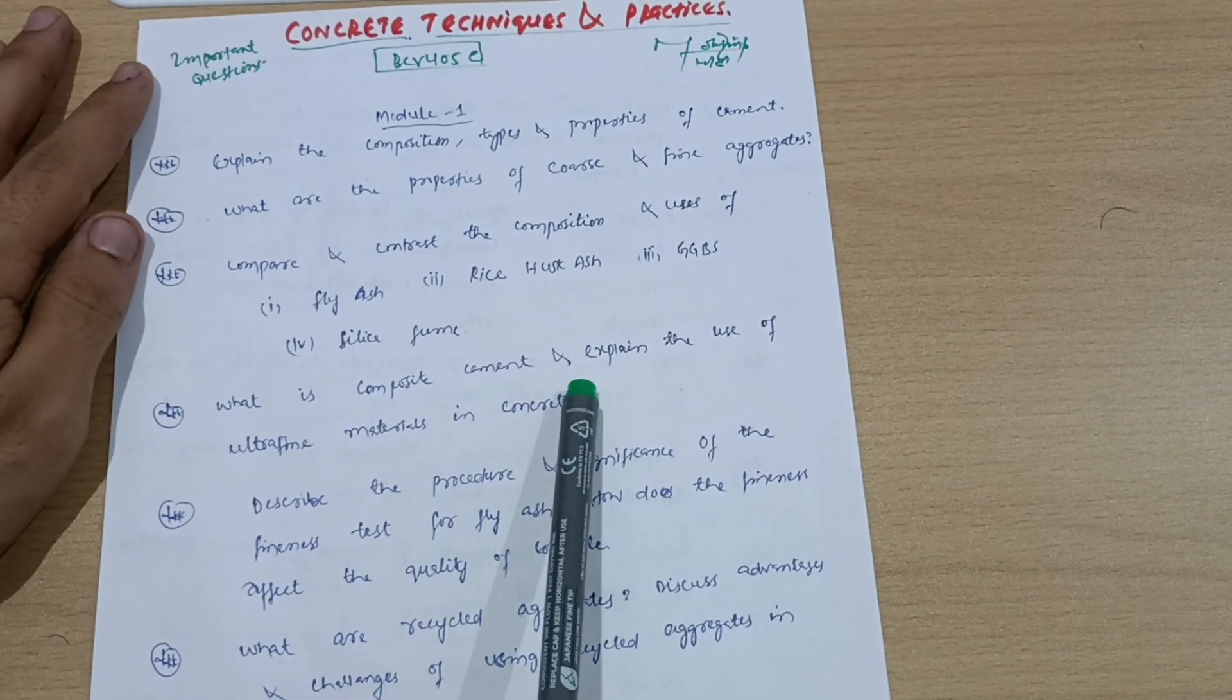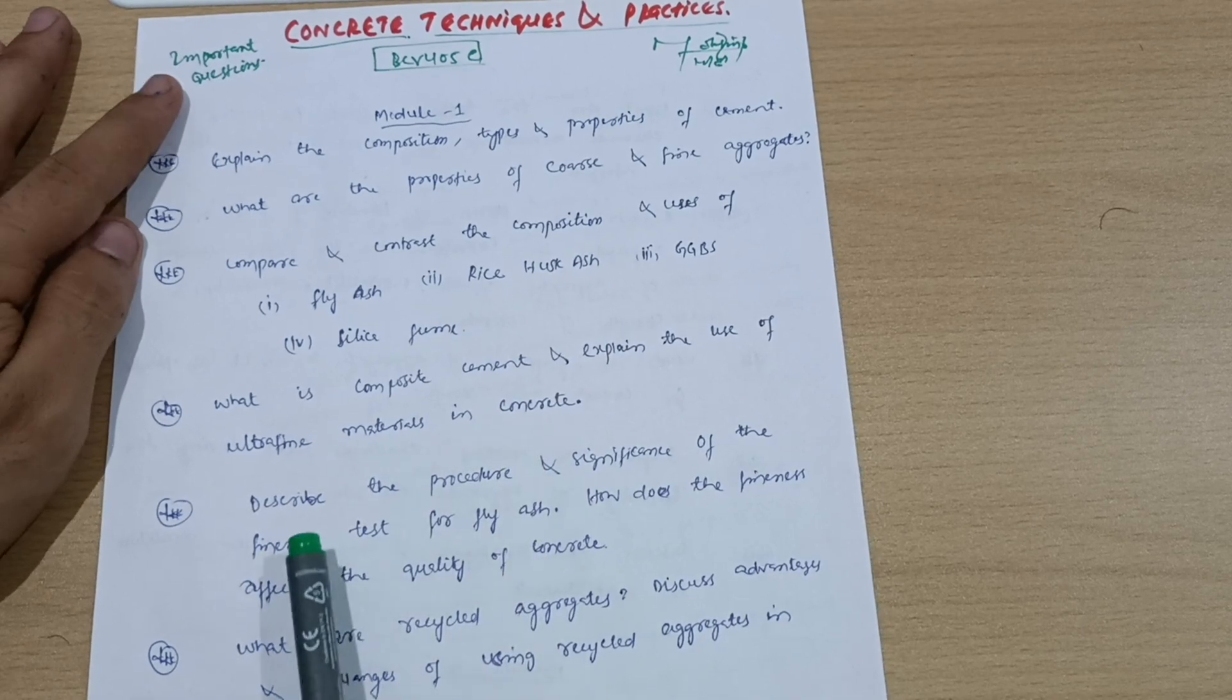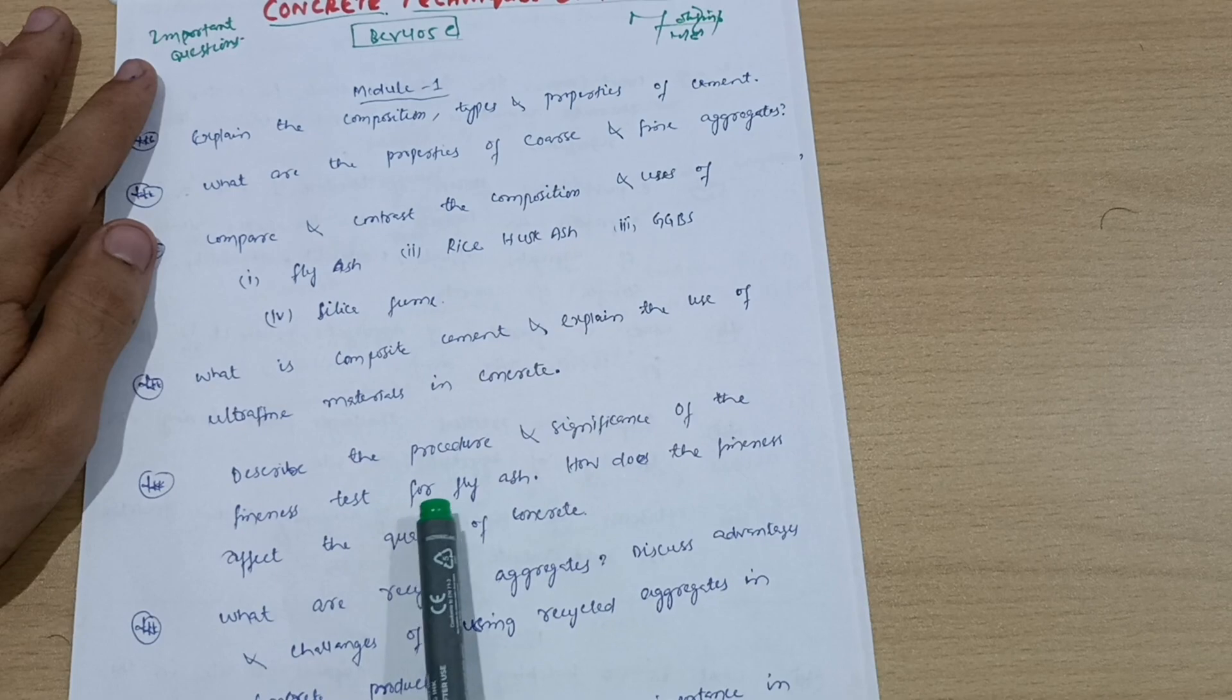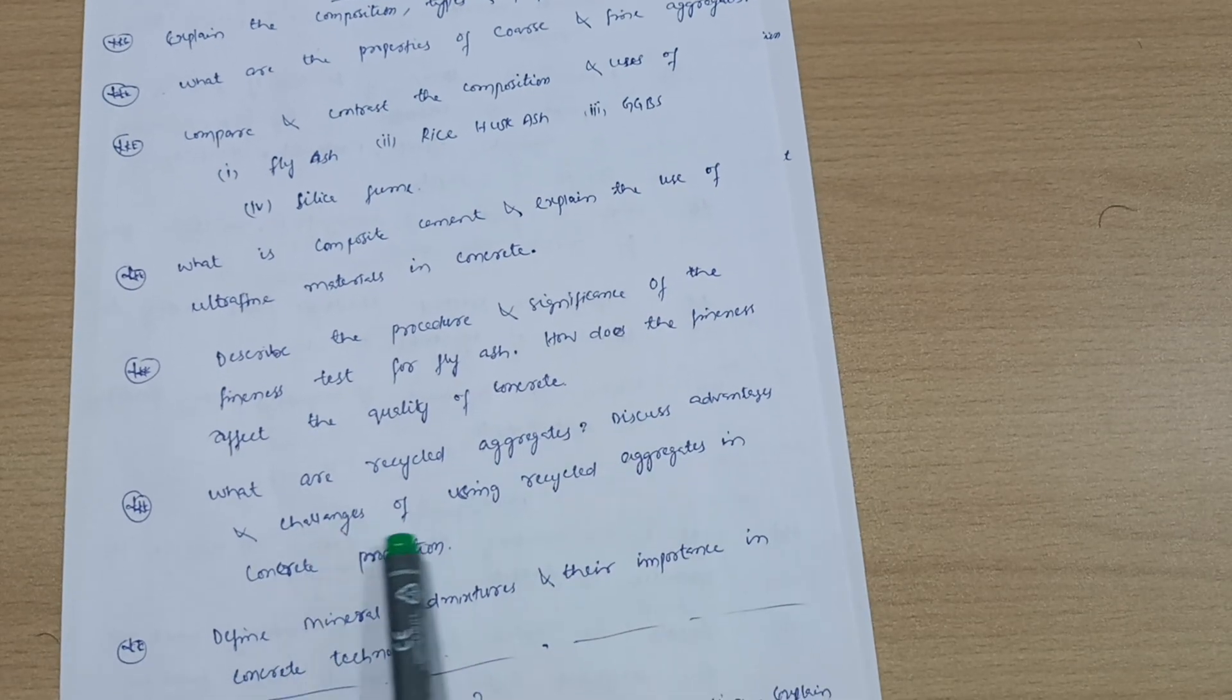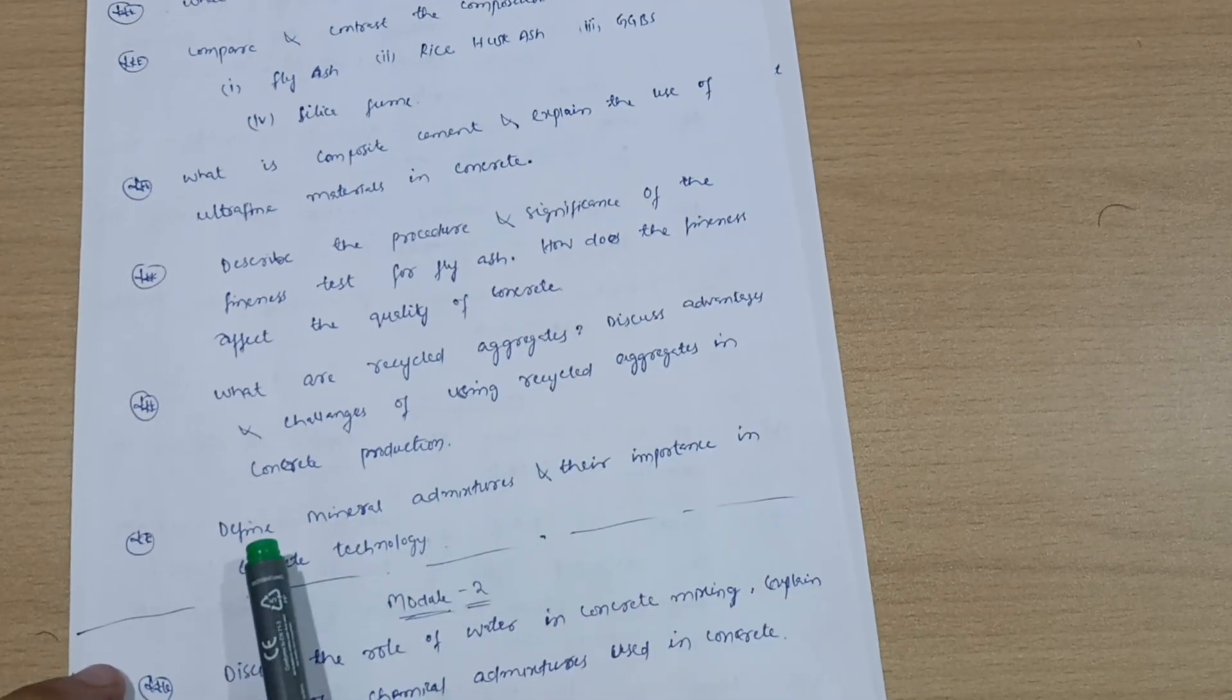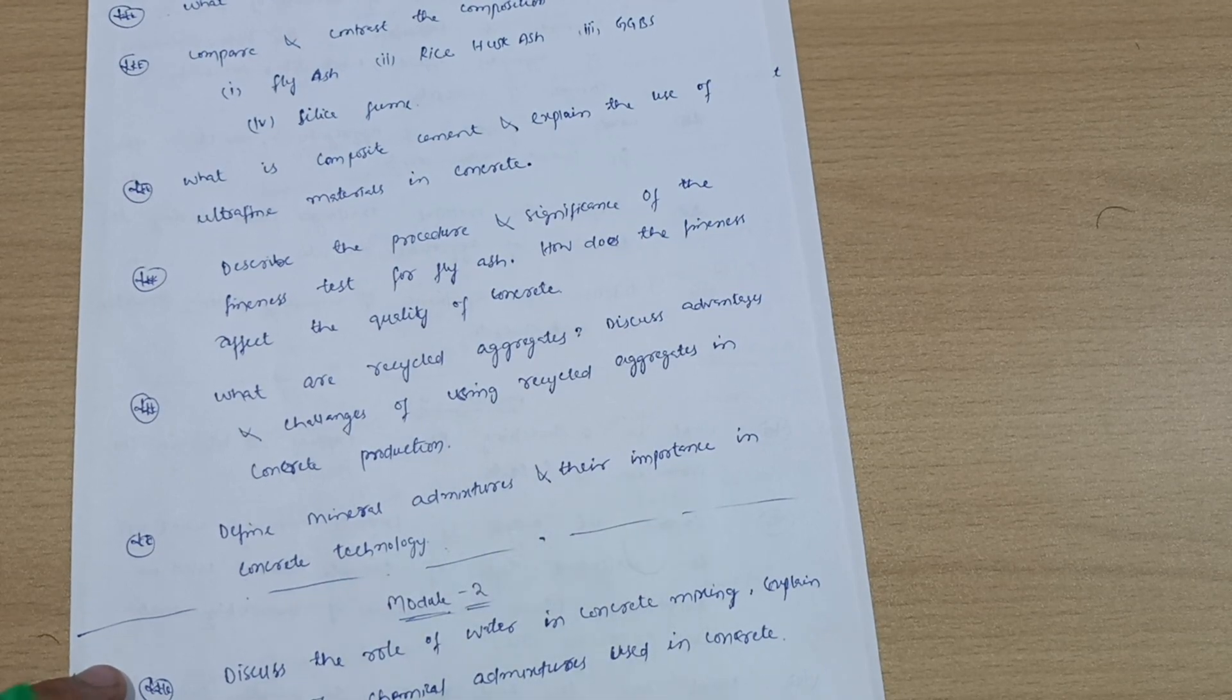What is composite cement and explain the use of ultrafine materials in concrete. Describe the procedure and significance of the fineness test for fly ash. How does the fineness affect the quality of concrete? What are recycled aggregates? Discuss advantages and challenges of using recycled aggregates in concrete production. Define mineral admixtures and their importance in concrete technology.